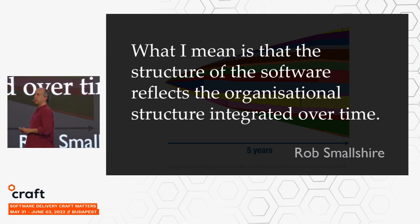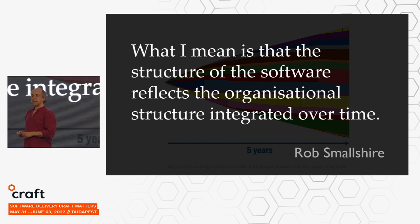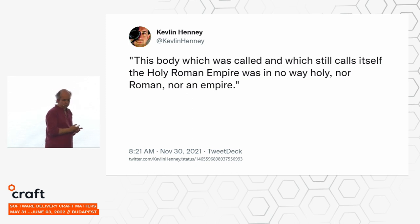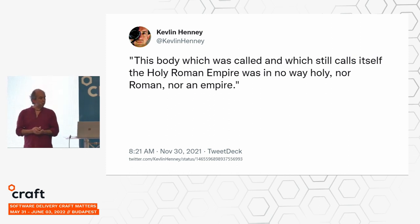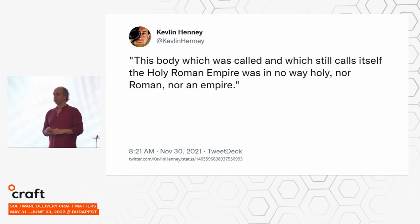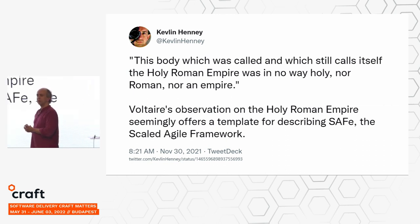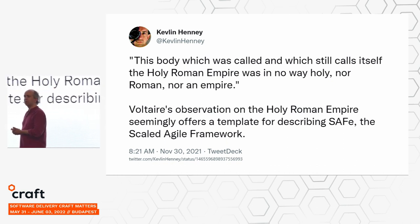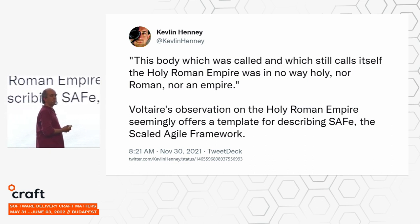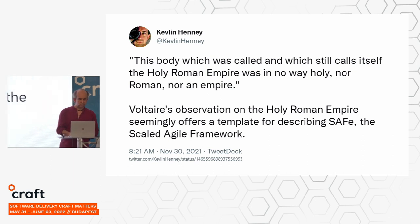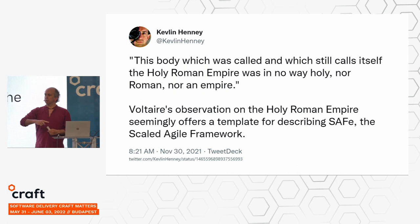People have come up with new ideas about scaling because they don't understand individuals and interactions. Voltaire said: 'This body which was called and which still calls itself the Holy Roman Empire was in no way holy, nor Roman, nor an empire.' Voltaire's observation seems to provide a template for the Scaled Agile Framework — in no way scaled, nor agile, nor a framework. It does not solve the problem people have unless the problem is how to get a scaled agile framework into your organization to pay consultants. Normally, when you want to scale something, you need to scale down, not up — reduce interdependencies and communications, not increase them.